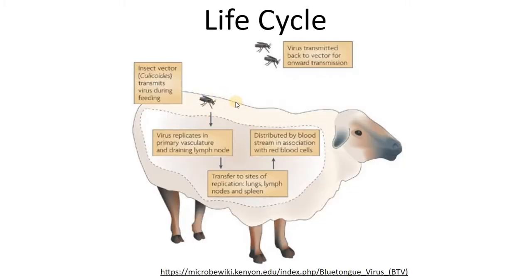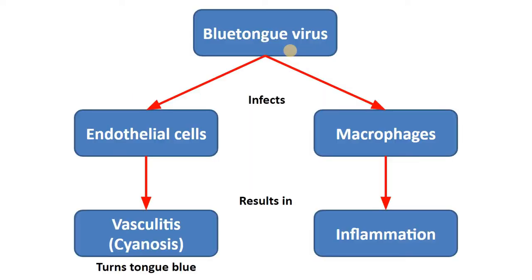After the infected midges bite the host and transmit the virus to it, blue tongue virus replicates in blood vessels and lymph nodes, and then spreads by blood to other tissues, particularly spleen, lymph node, and lung. And when a new insect feeds on an infected animal, it acquires the virus from the blood and transmits it to a new host.